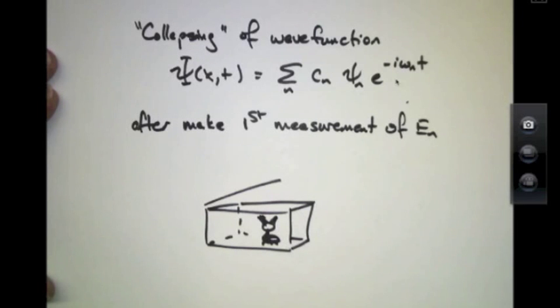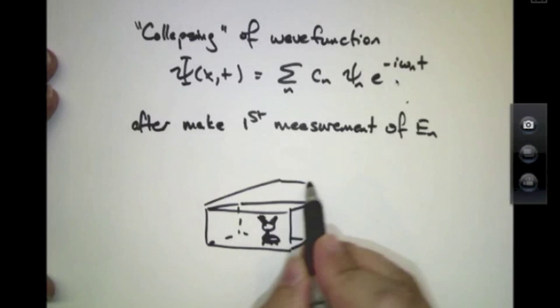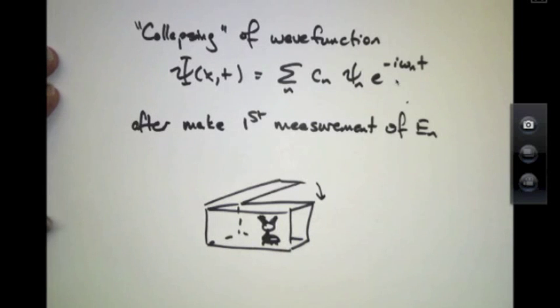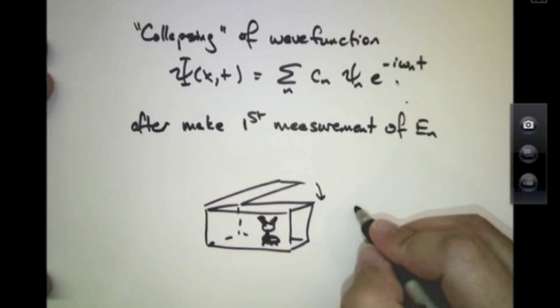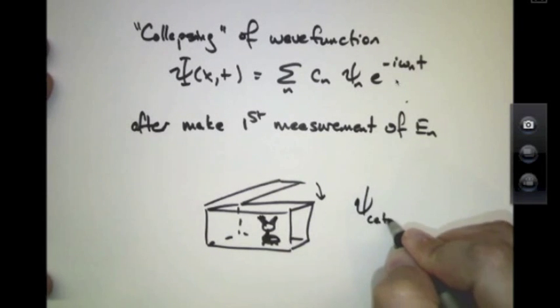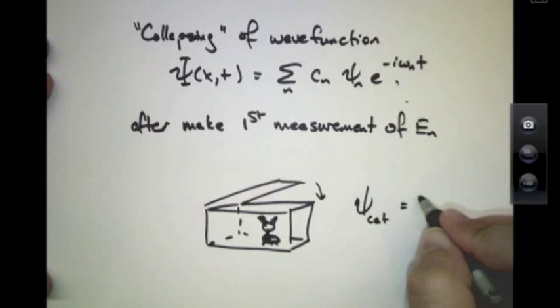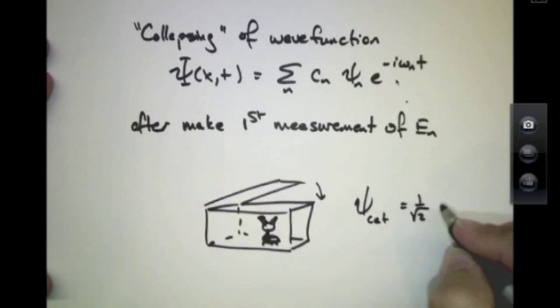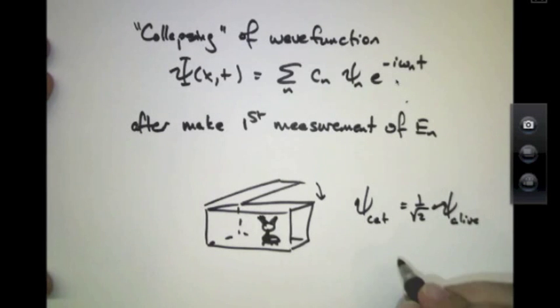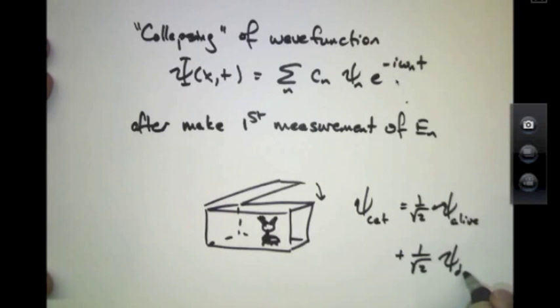That's Schrödinger's cat. The premise here is if I close the lid on this box and I cannot look inside, I couldn't tell you if the cat was alive or dead. So I have to give it a probability of being alive plus a probability of being dead. That's once the lid's closed.